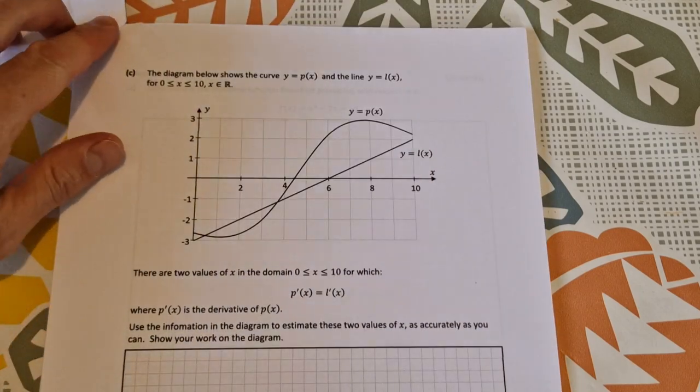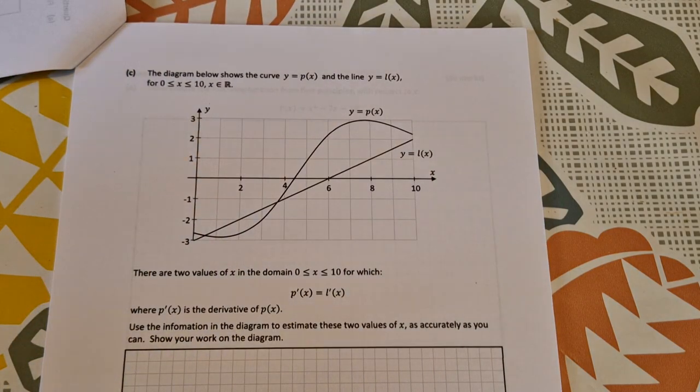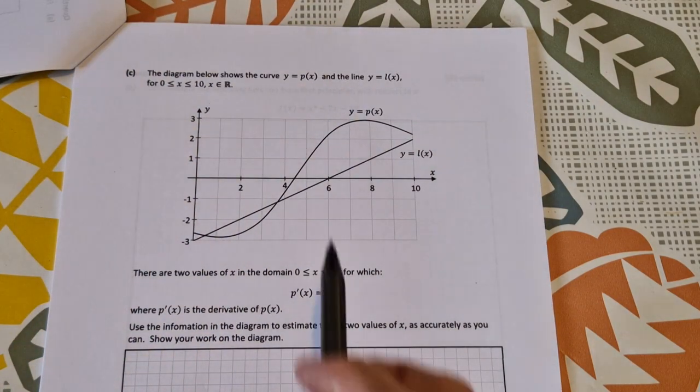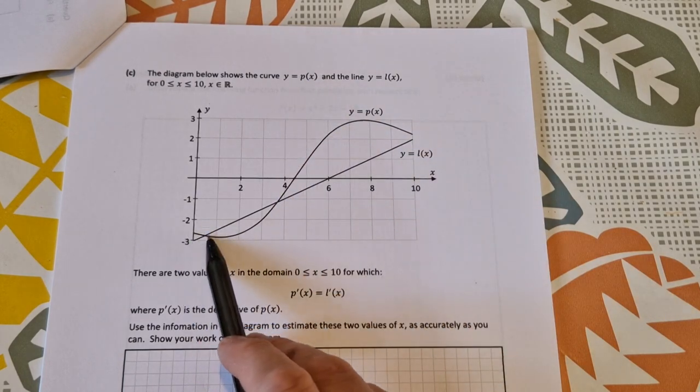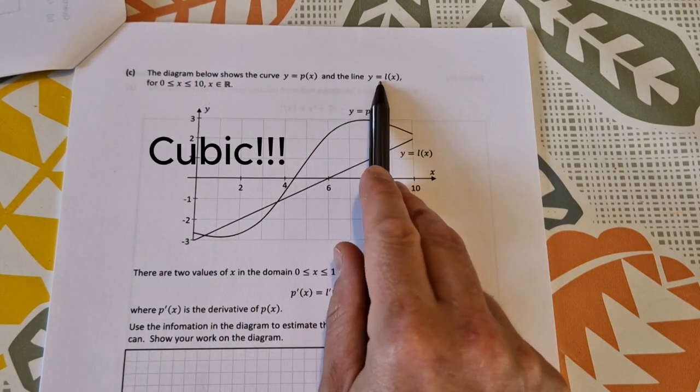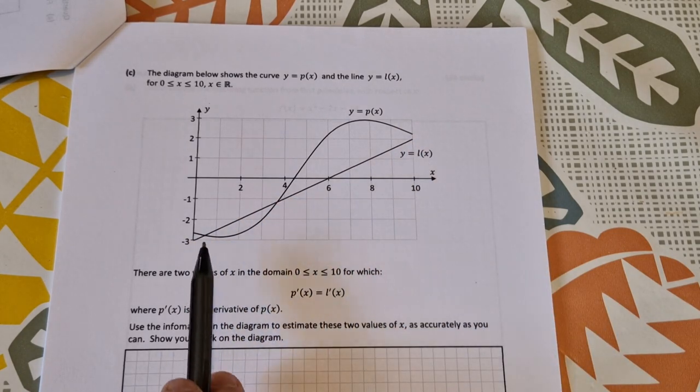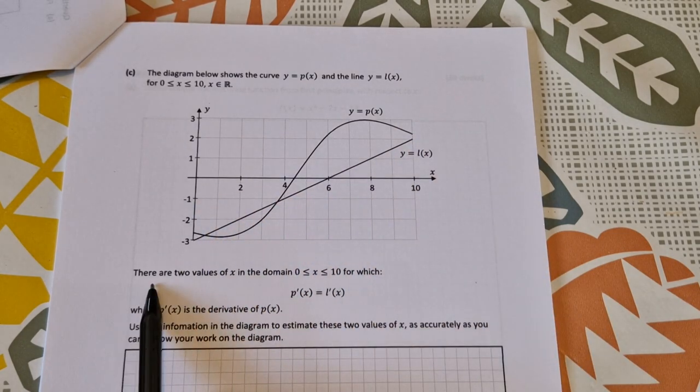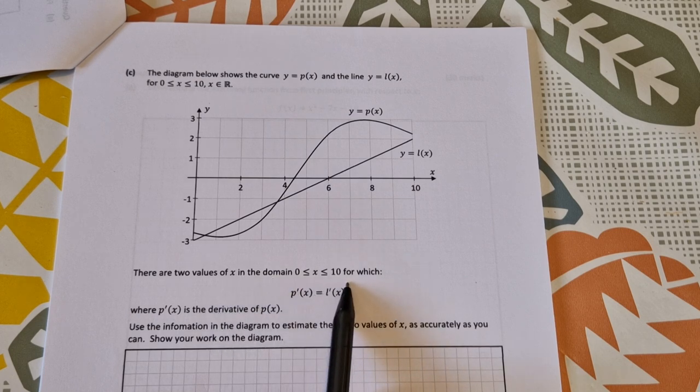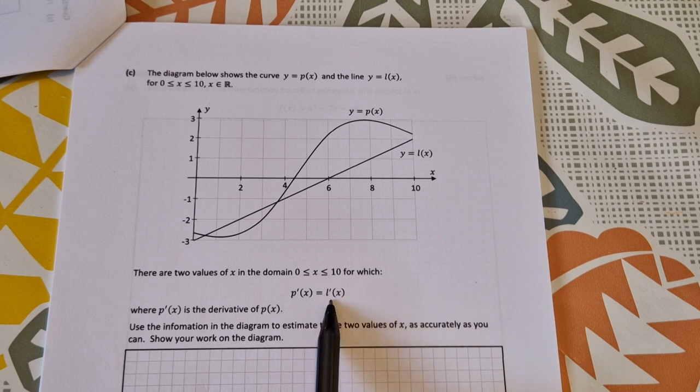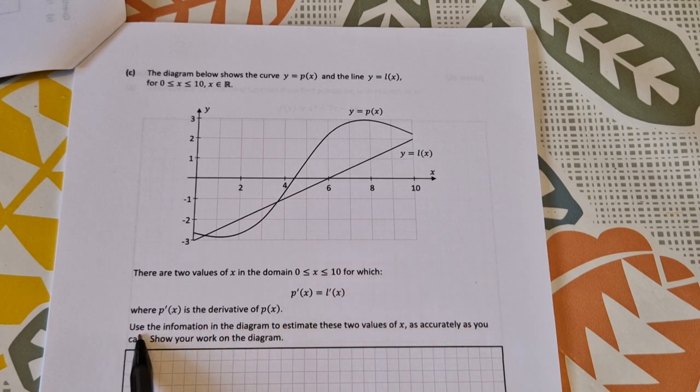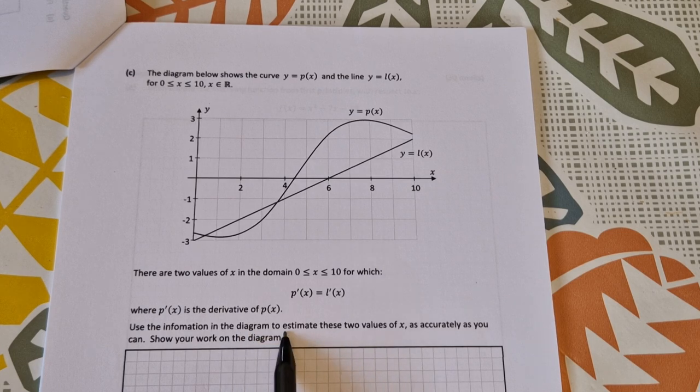Now for part C, you're given a diagram showing the curve y = p(x), which looks like a quadratic curve, and the line y = l(x). Between 0 and 10, there are two values of x in the domain for which the derivative of p(x) is equal to the derivative of l(x). Use the information in the diagram to estimate these two values of x as accurately as you can. Show your work on the diagram.